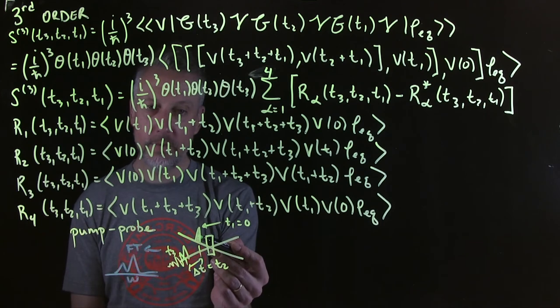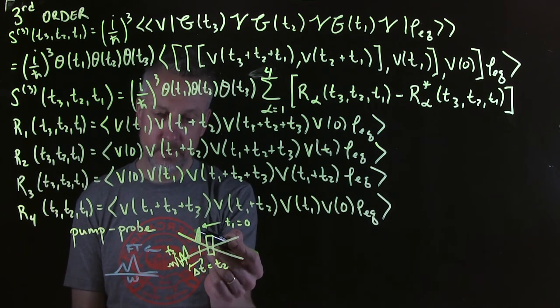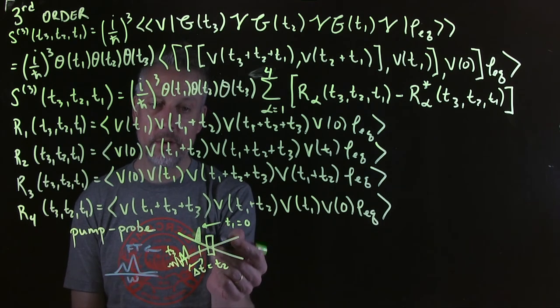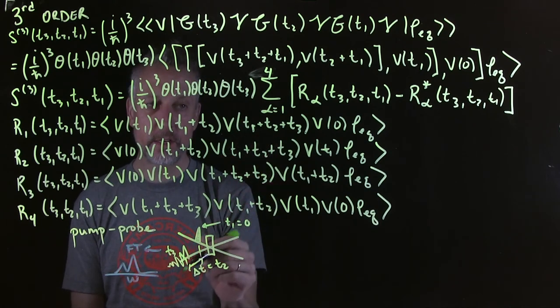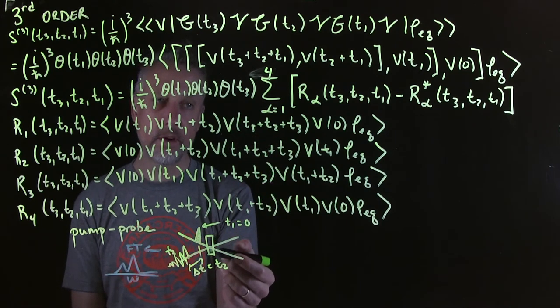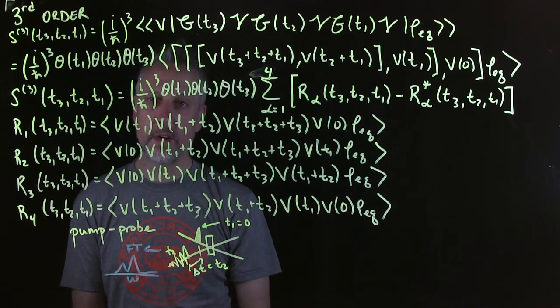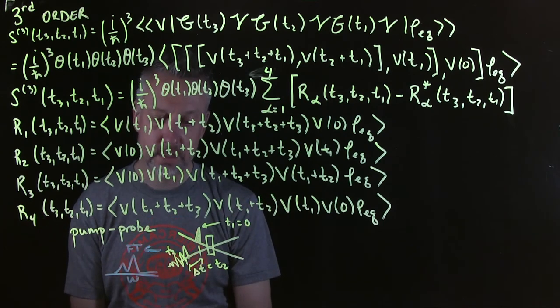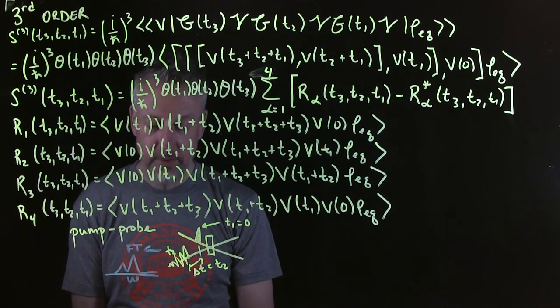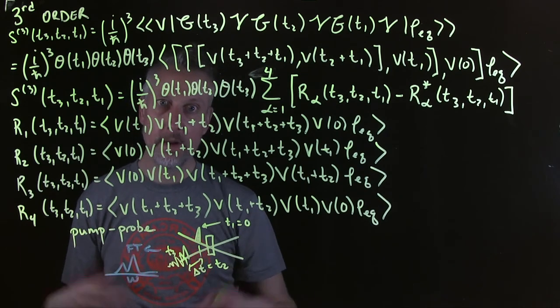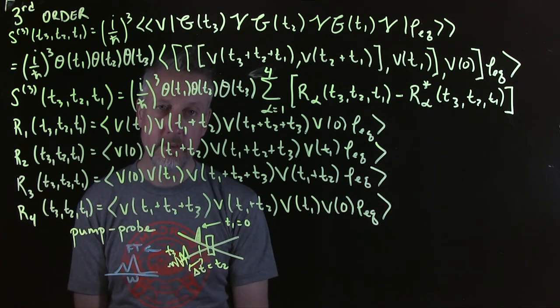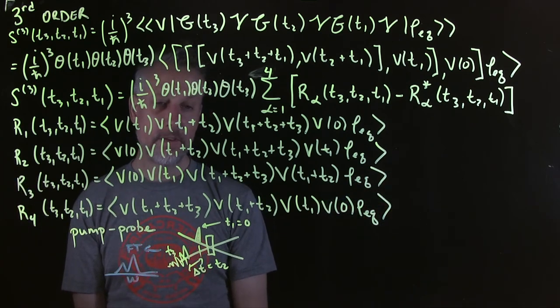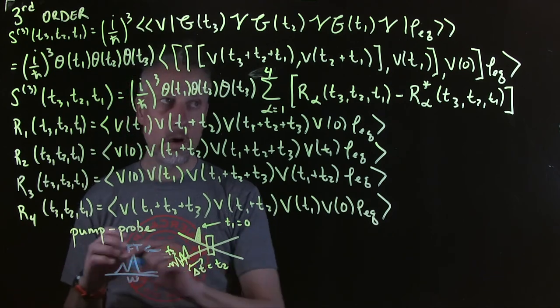All right. And so if you just have a single pump pulse, or usually that's the way you think about having a single pump pulse, it has, it's like having two field interactions occurring simultaneously. So T1 equals zero. So that simplifies almost all of these formulas here, right? Because that means that a lot of pathways are indistinguishable because there's no separation of time delay between the first two interactions. All right. So we would think of them as occurring simultaneously.